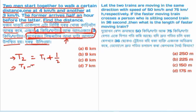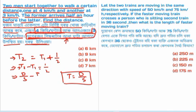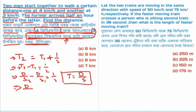We set up time 2 and time 1, with the difference being half an hour. Time equals distance divided by speed. So: distance divided by 3 minus distance divided by 4 equals one half. Solving this gives us the distance.